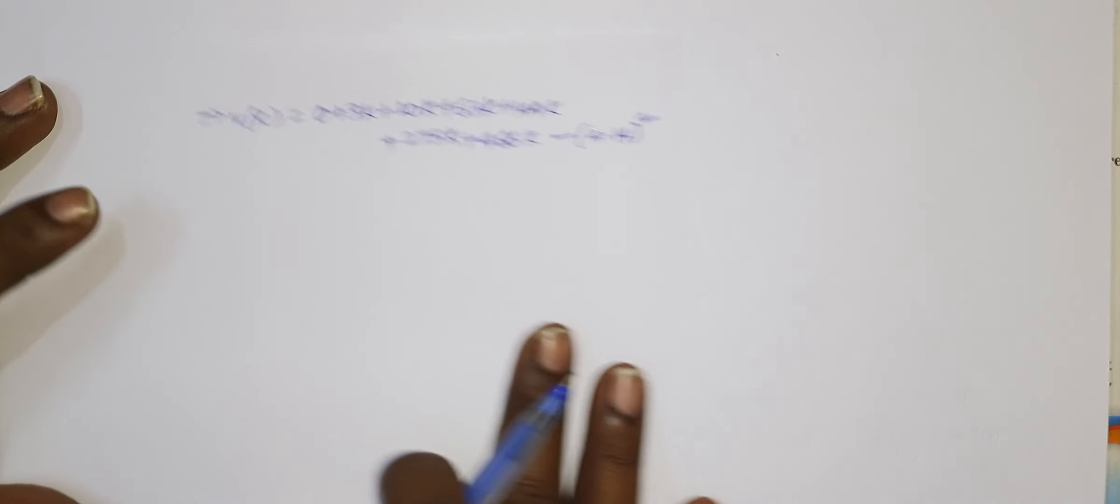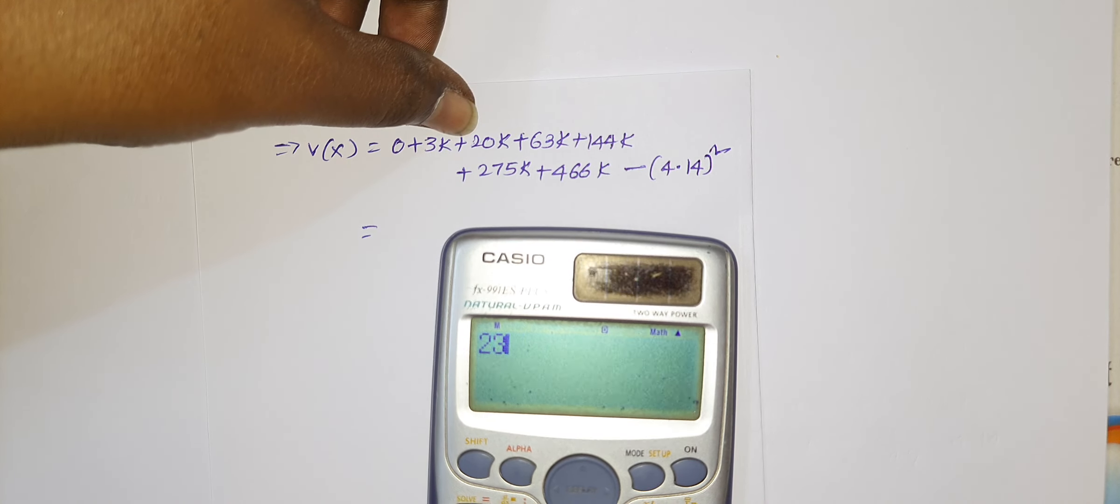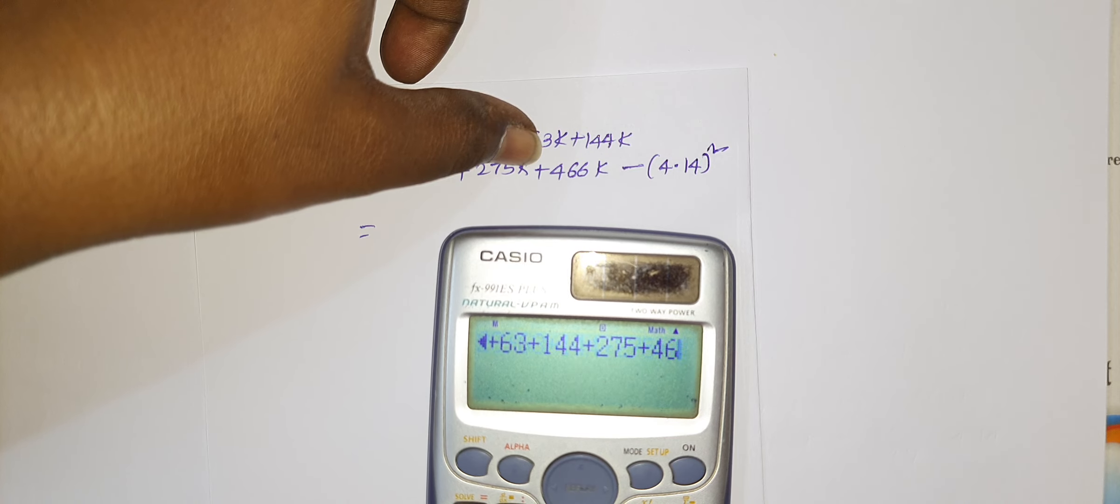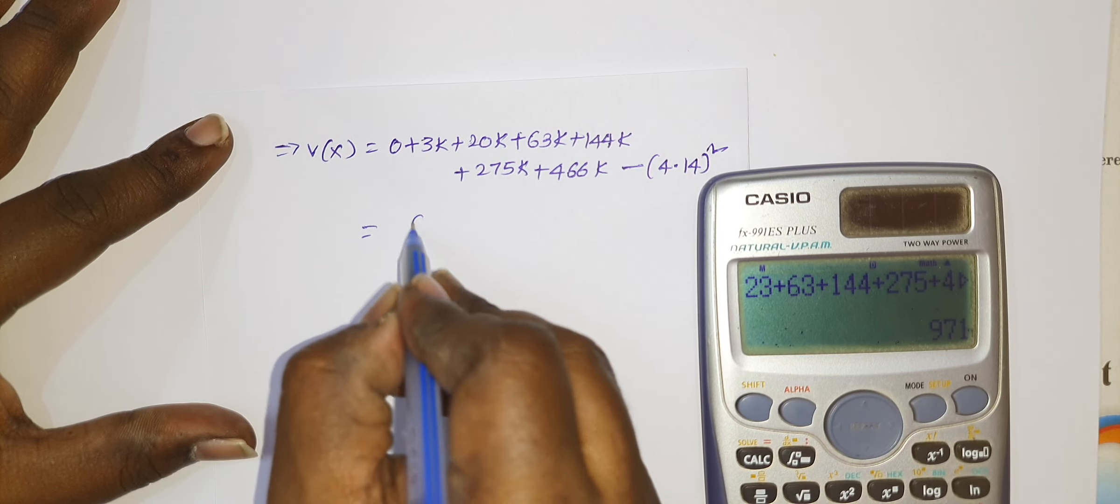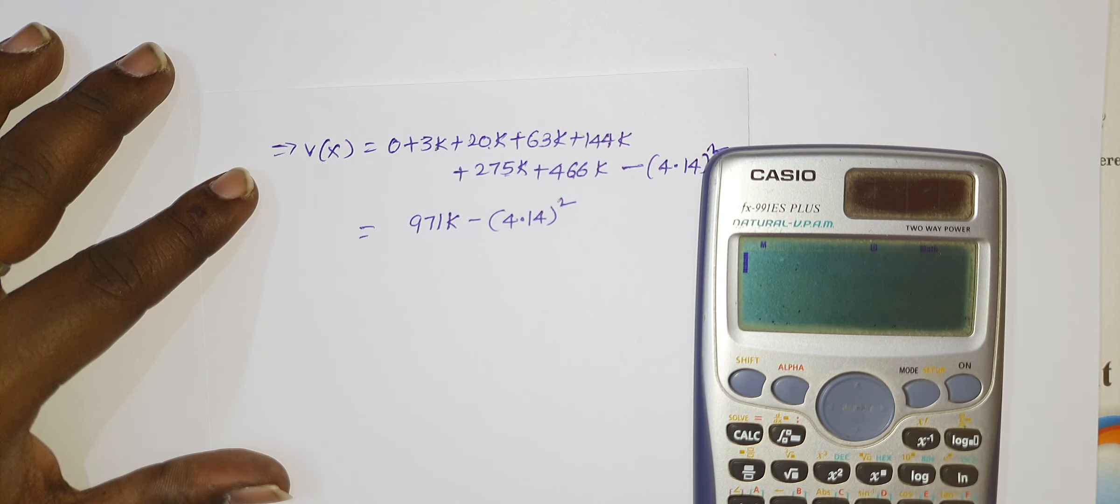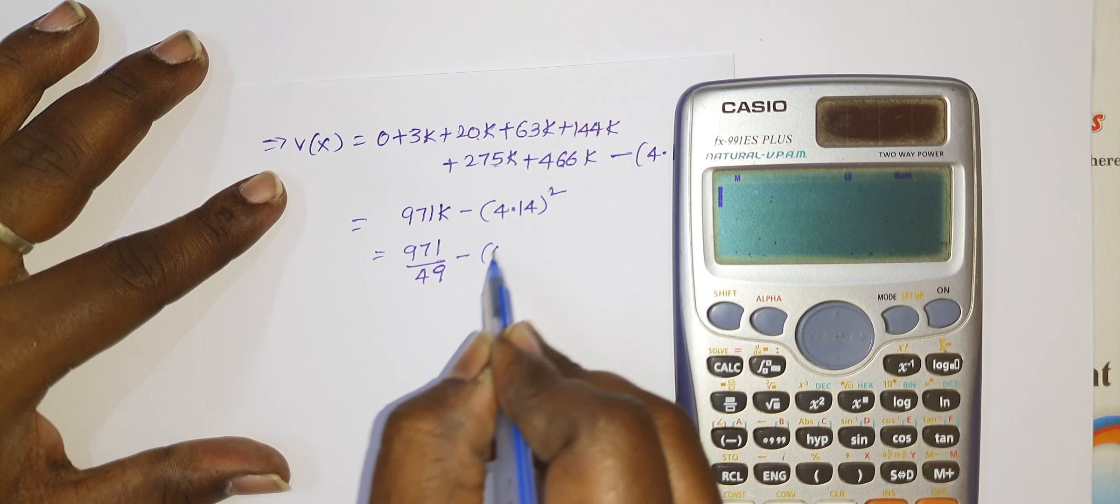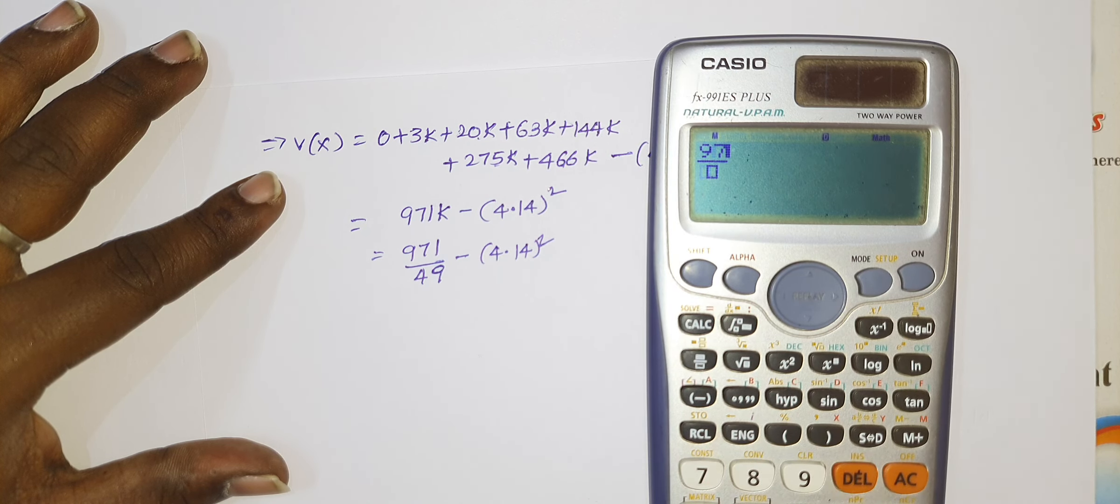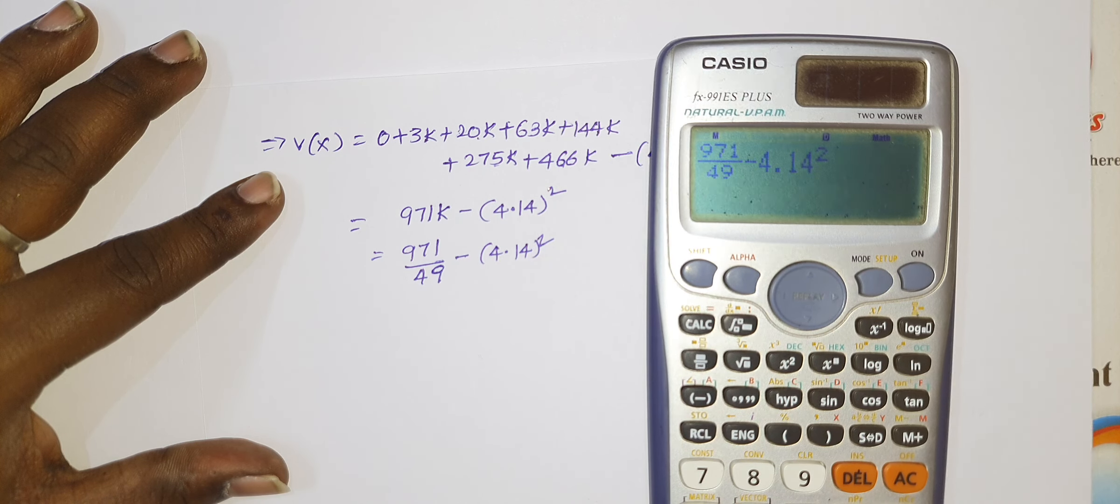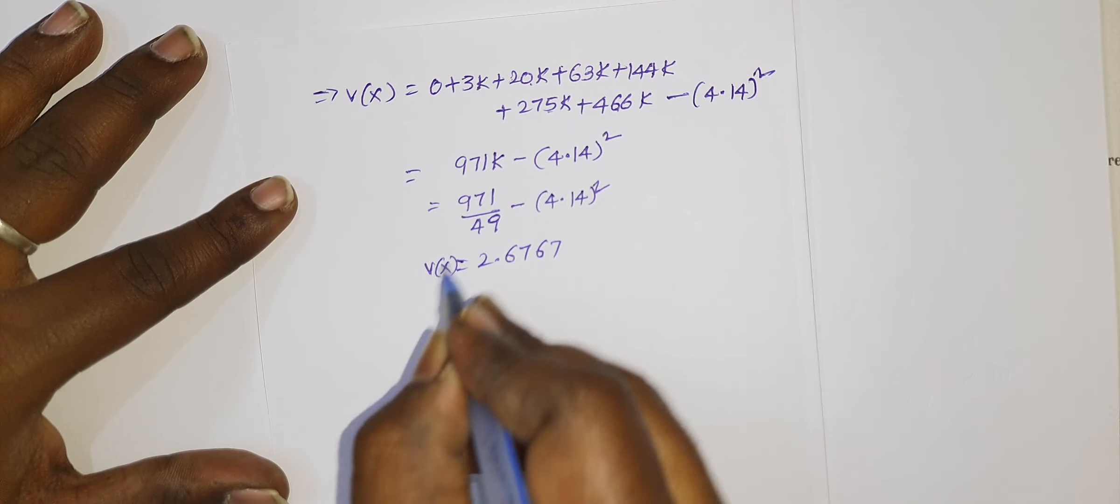We have to calculate this. So 3 plus 20 is 23, plus 63, plus 144, plus 275, plus 468, I got 971. 971k minus 4.14 whole square. Now by using calculator, k is nothing but 1 by 49, minus 4.14 whole square. So you can take this number, 971 division 49 minus 4.14 square. I got 2.6767. It's enough. This is the variance of the given discrete random variable.